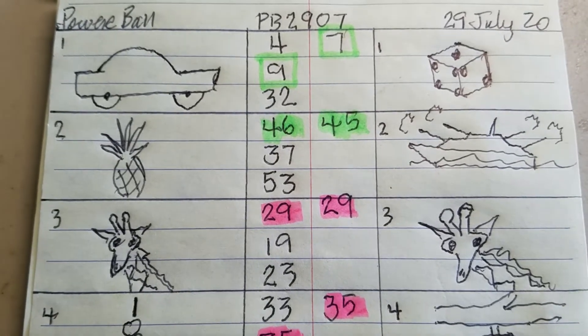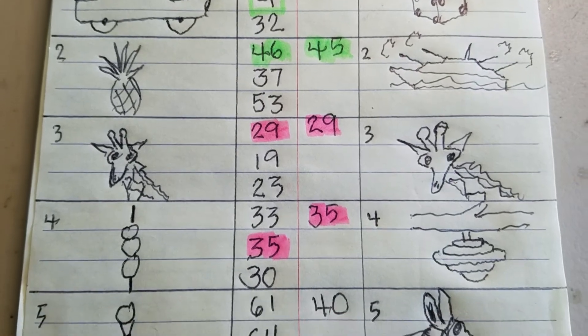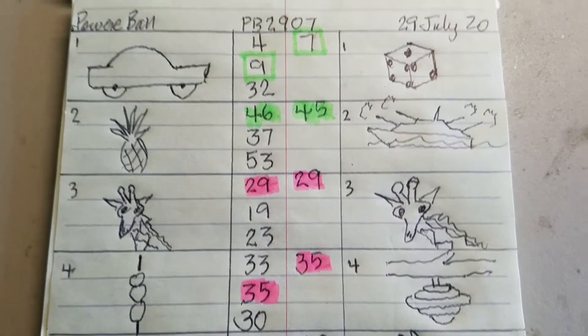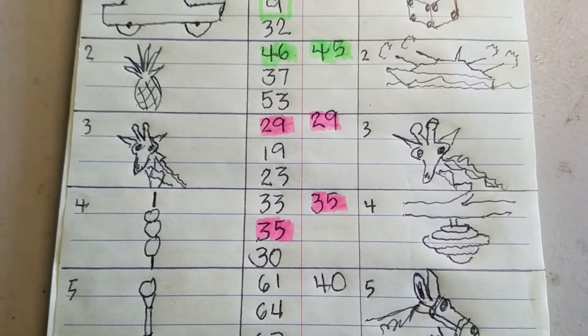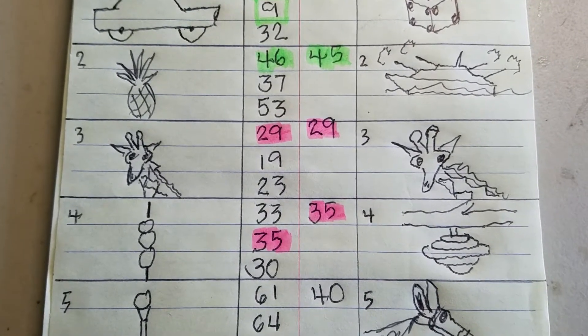Here are the results and just scanning the results you notice that I have two pinks and a highlighted green and two box greens. What that is telling me is that I had two hits, the 29 and 35.